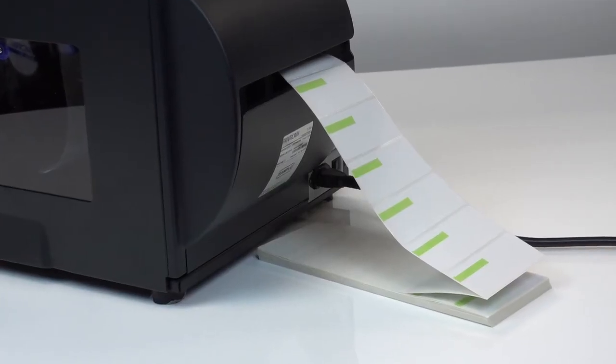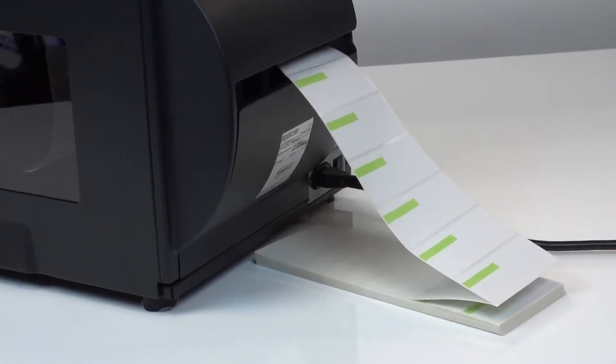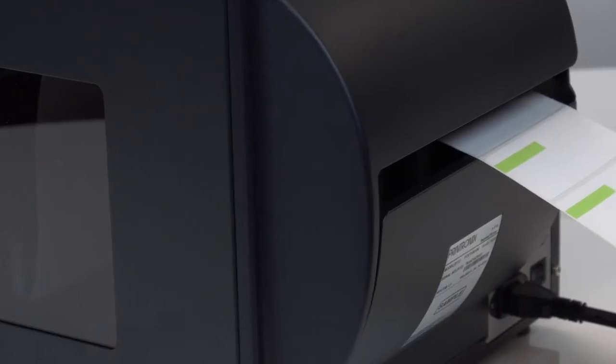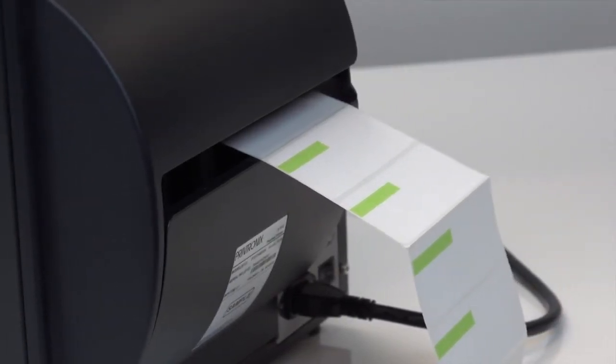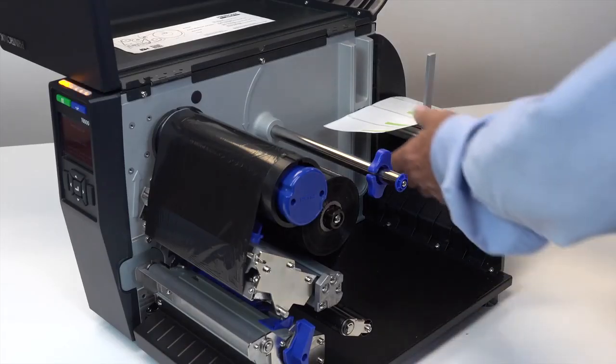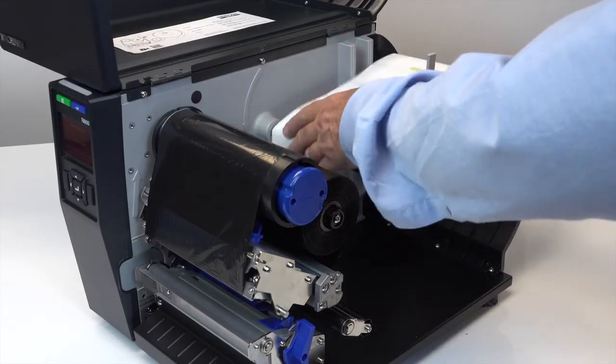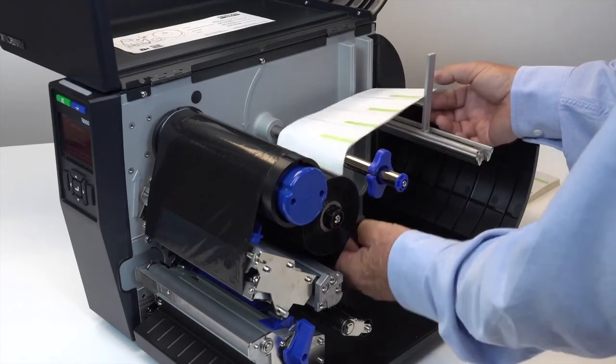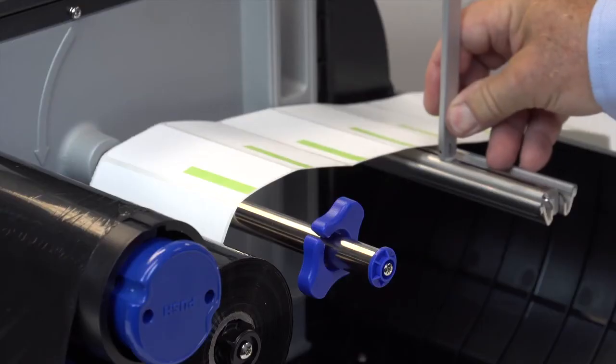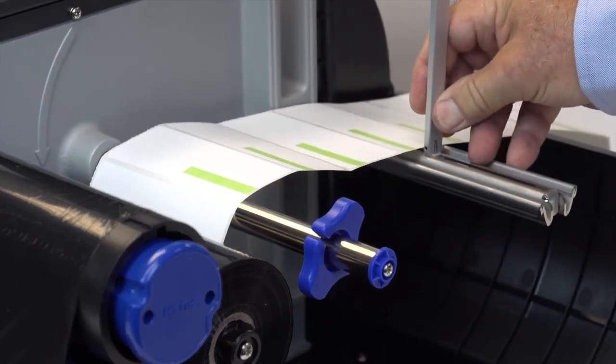Fan fold media is supported on the four and six inch model T6000 printers. The four inch model has a fan fold media entrance slot at the bottom and at the back of the printer. The six inch model has one fan fold entrance slot at the back. In all T6000 models, the fan fold media can then be routed through the printer following the same procedures as the roll media described above.